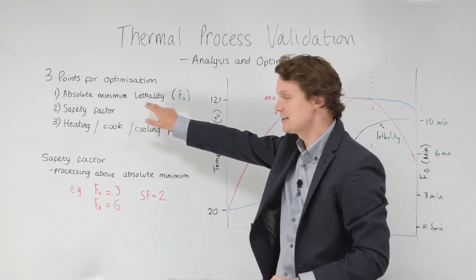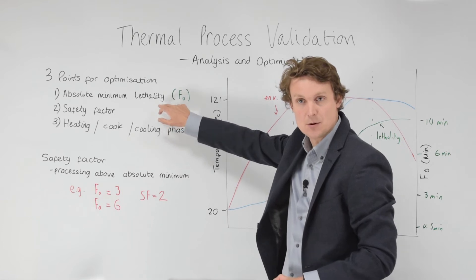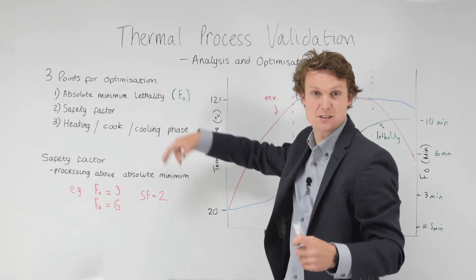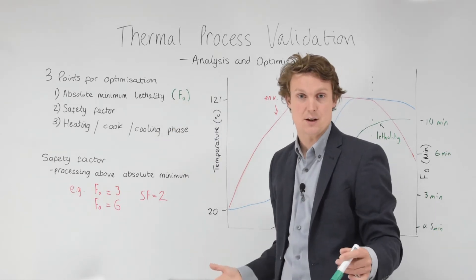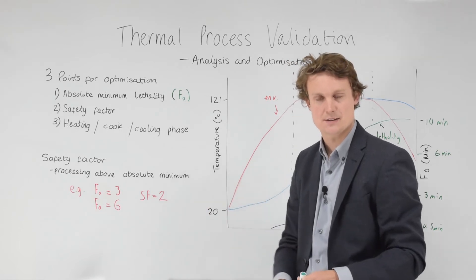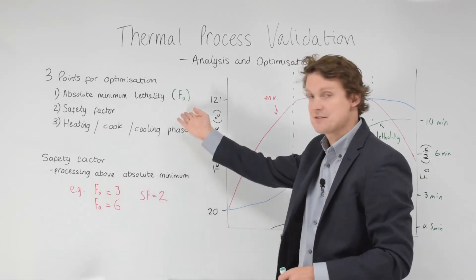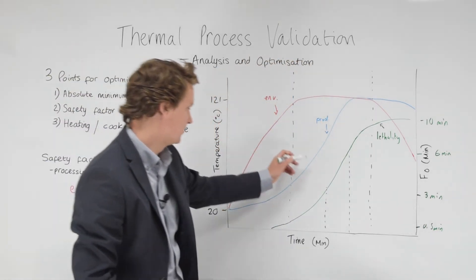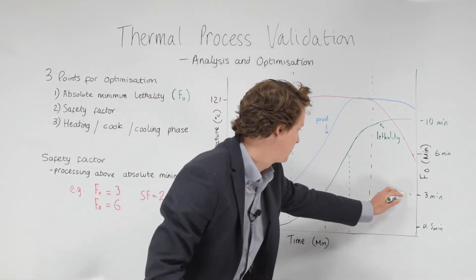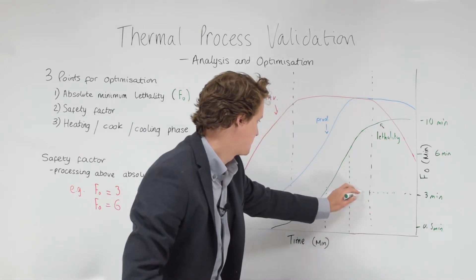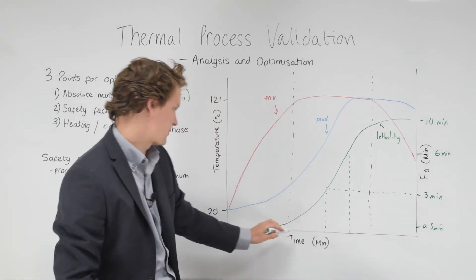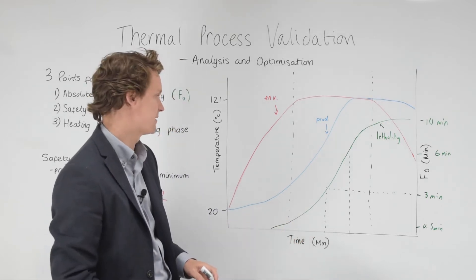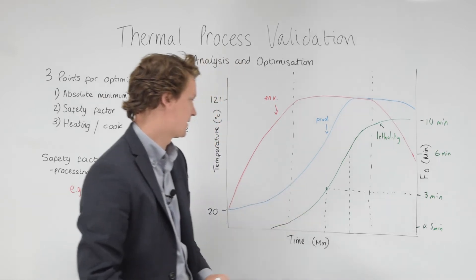We need to understand what our absolute minimum lethality is. In this example, we are talking about a sterilization process. Sterilization worldwide is known to have a minimum level of lethality of three minutes. That is known as F0. So our absolute minimum level in this example would be the point at which the lethality reaches three minutes. That is the absolute minimum level for food safety.